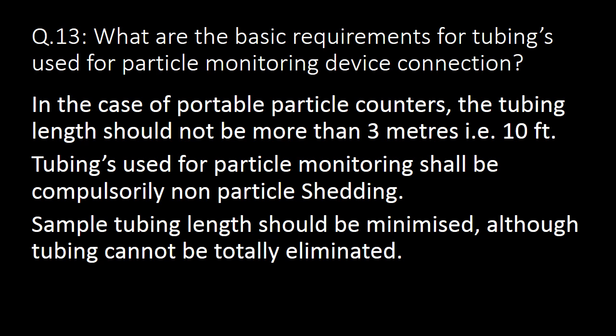What are the basic requirements for tubing used for particle monitoring device connection? For portable particle monitoring systems, the tubing length should not be more than 3 meters (10 feet). Tubing used for particle monitoring shall be compulsorily non-particle-shedding. Sample tubing length should be minimized, although tubing cannot be totally eliminated.